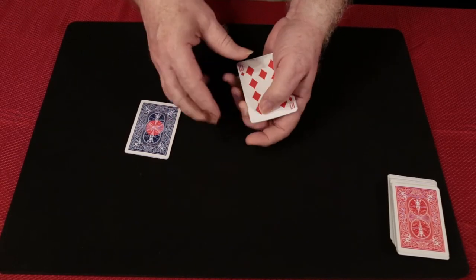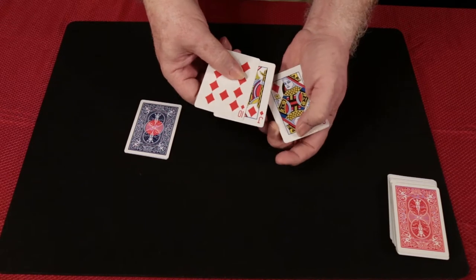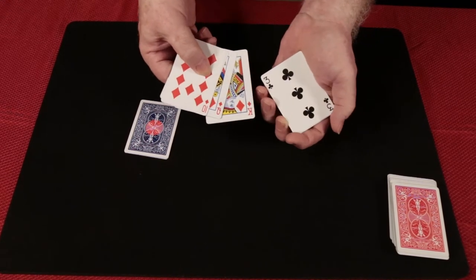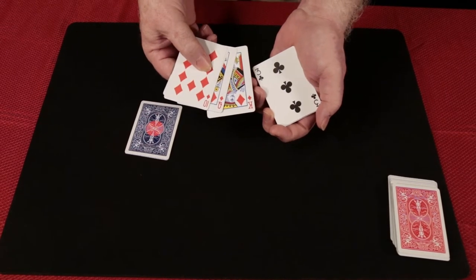We have a ten of diamonds, a jack of diamonds, a queen of diamonds, a king of diamonds, and oh darn. Well, that's a game spoiler. That three of clubs is no good to us.